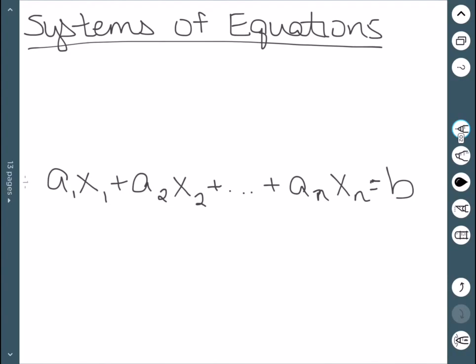A1x1 plus A2x2 all the way up to anxn equal to b. Like I said, these are linear equations.